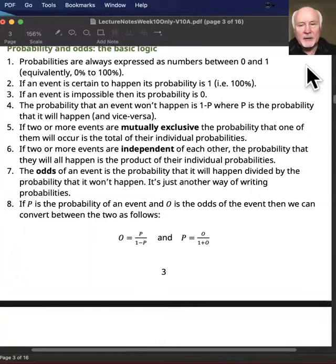If you have two or more events that are mutually exclusive, in other words only one of them can happen, then the probability that one of them will happen is the total of their individual probabilities.